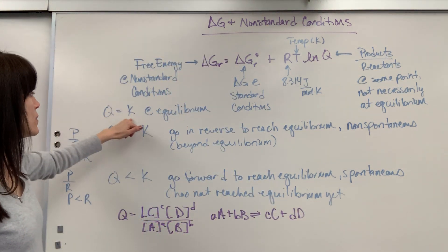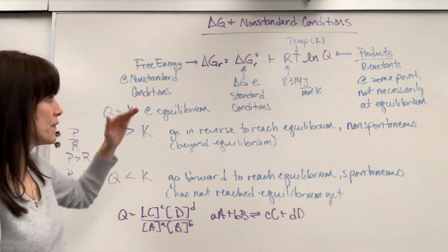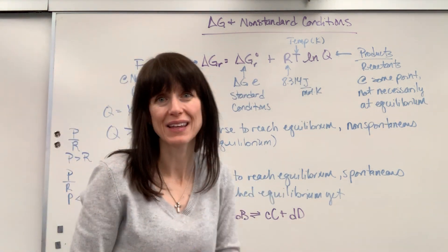All right, so with that, if Q equals K, that means that we're at equilibrium. So if the ratio of products over reactants equals K, Q equals K, boom, great, we're at equilibrium.